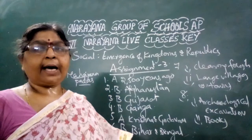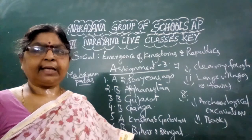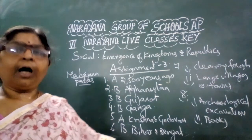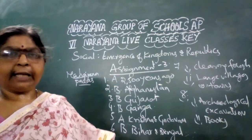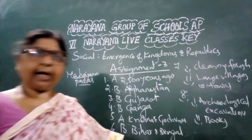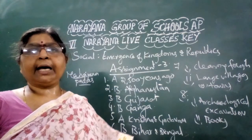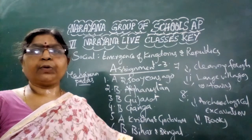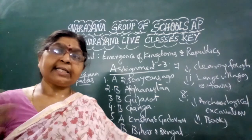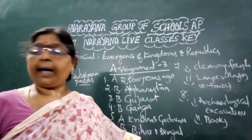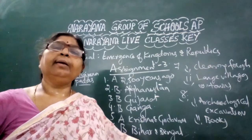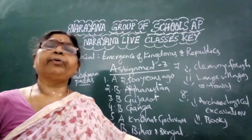There were 16 Mahajanapadas in total. These include Kamboja, Gandhara, Avanti, Asmaka, Vajji, Magadha, Kasi, and Surasena, among others. There were 16 Mahajanapadas during that particular period.